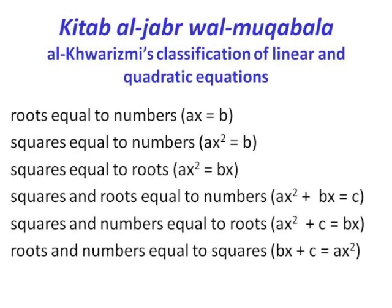The title of his algebra book — Kitab al-Jabr al-Muqabbalah — gives us our word algebra; 'al-jabr' refers to transposing a term from one side of an equation to the other. Al-Khwarizmi's algebra covers linear and quadratic equations. Since negative numbers were not considered meaningful, he had to split equations into six types, such as: roots equal to numbers (ax = b), squares equal to numbers (ax² = b), squares equal to roots (ax² = bx), squares and roots equal to numbers (ax² + bx = c), and so on.